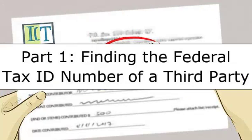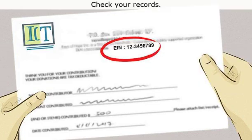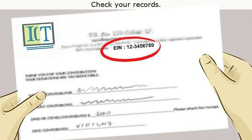Part one: finding the federal tax ID number of a third party. Step one, check your records. If you need to find a company's EIN and you have done business with them, that number may appear on any invoices you've received or other records you have of your transactions with them. For example, you may need the EIN of your child's babysitter or child care facility so you can claim the child care credit on your taxes. It is customary for child care services to put their EIN on invoices and sometimes even on letterhead. Non-profit organizations also typically list their EIN on any official correspondence. If you have made a charitable contribution and need the EIN for tax purposes, the number may be located on the receipt you received from the organization.